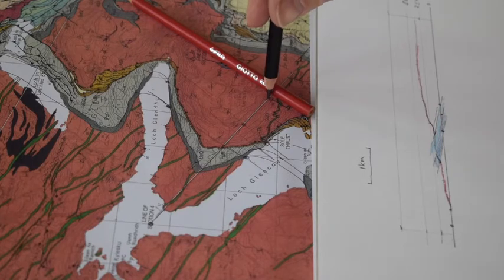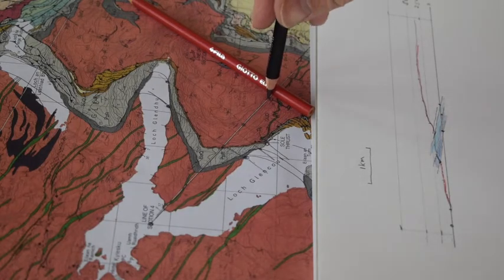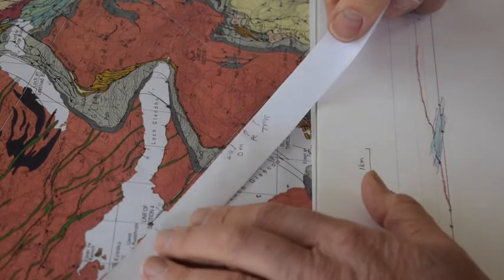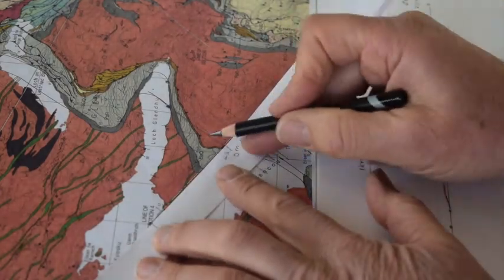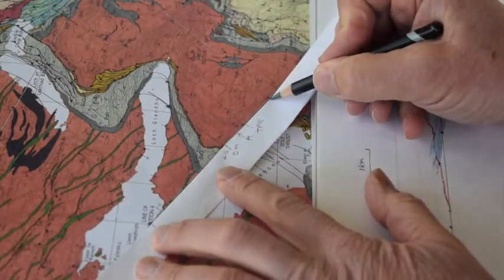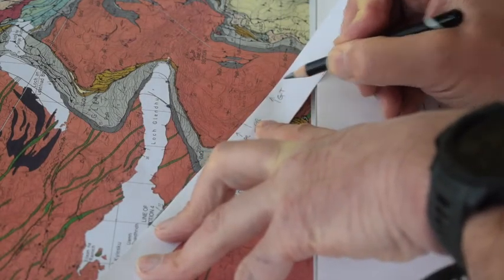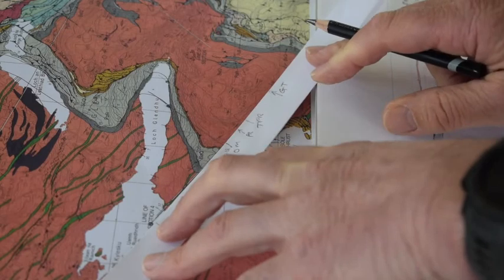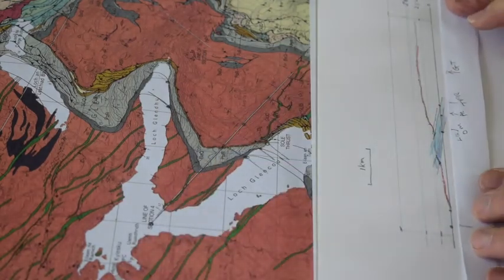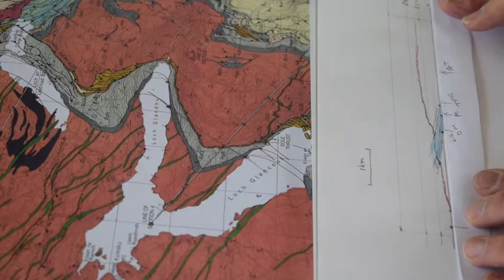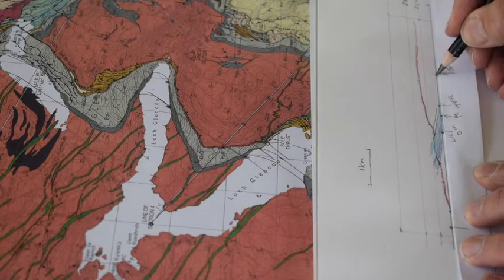Well, to find that we just have to measure back from our reference point again. So let's take our map strip, line it up, put it along the section line. That's where we've just made that decision. So that is Glencool thrust at zero meters. Take that information now onto our profile.